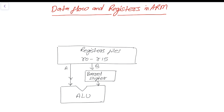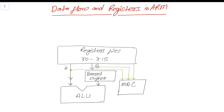Apart from the ALU there is a MAC unit. The MAC unit is known as a multiply and accumulate unit. This unit takes value A, it also takes B, and it also takes a previous carry accumulation.